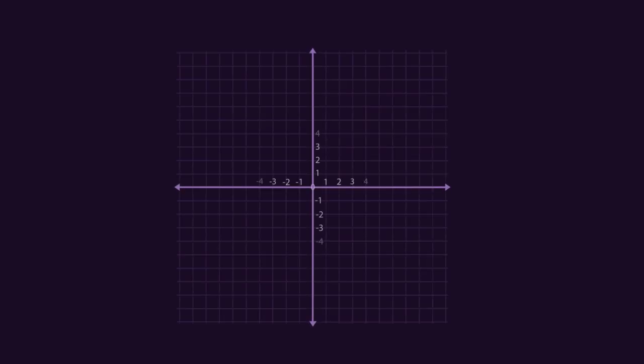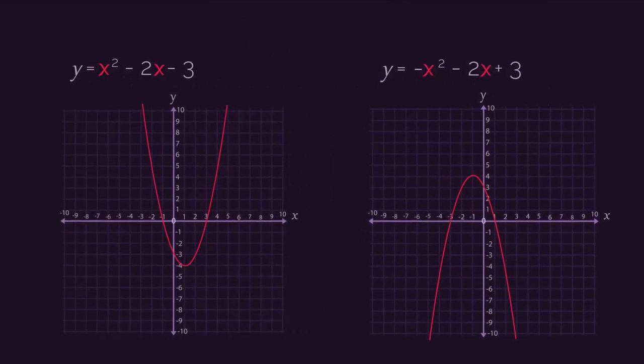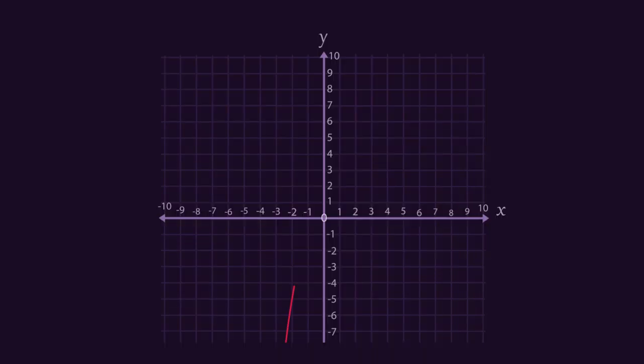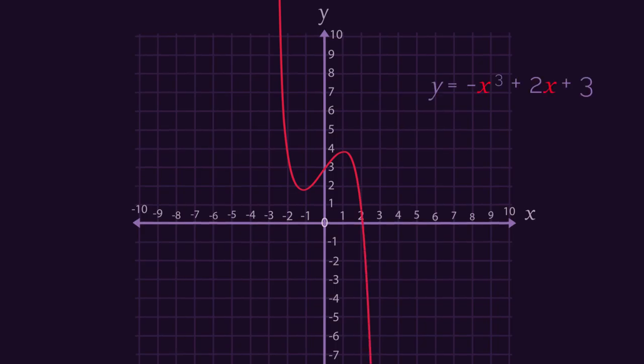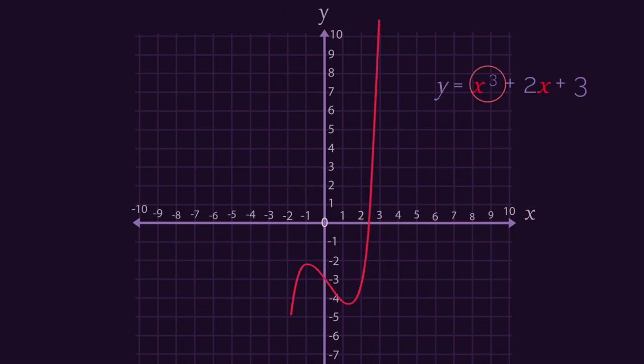Straight line equations look like this on a graph, and quadratics either look like this or like this. So cubic functions, they will look like this or like this. So when you see the x cubed as the highest power, you know that it's going to be a cubic function. And if it's a positive x cubed, it will look like this.